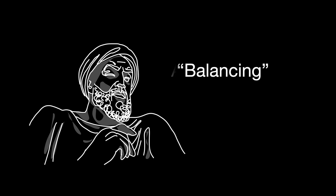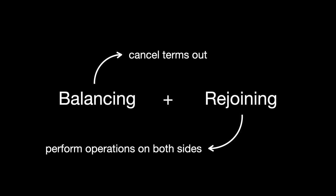Al-Khwarizmi introduced basic algebraic operations, described by him as balancing, along with the concept of rejoining. Balancing meant to cancel the terms out, while rejoining meant to perform operations on both sides of an equation.